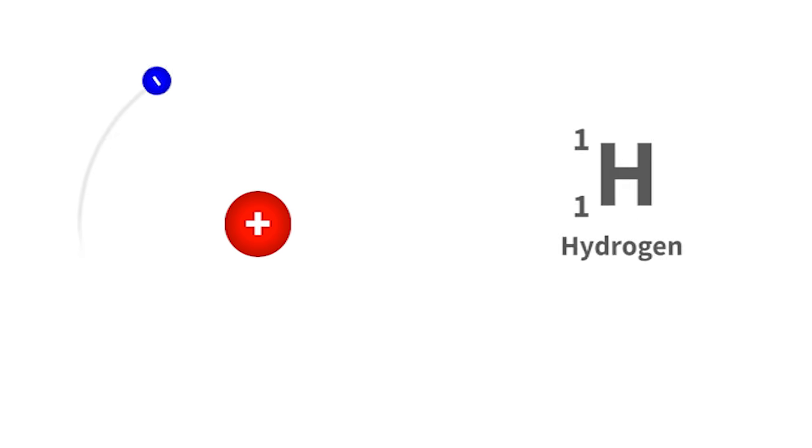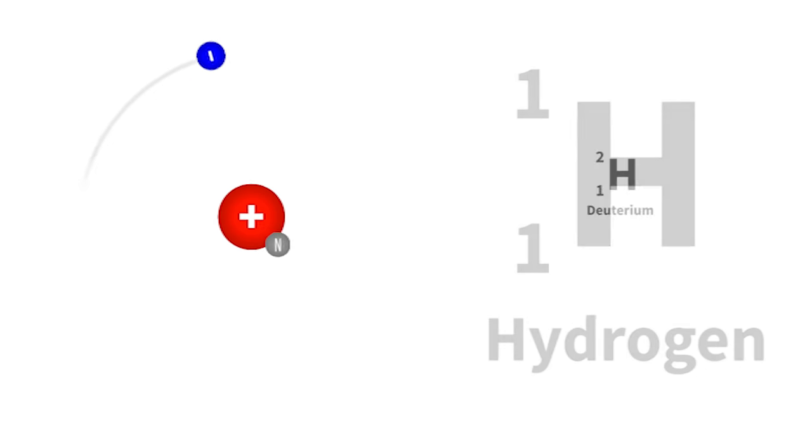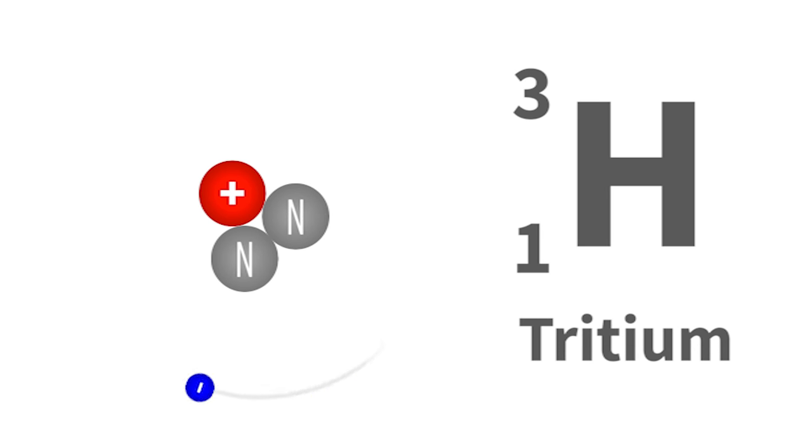A hydrogen isotope is just a hydrogen atom but with a different number of neutrons in the nucleus. This means it has the same chemical properties but just a different atomic weight.